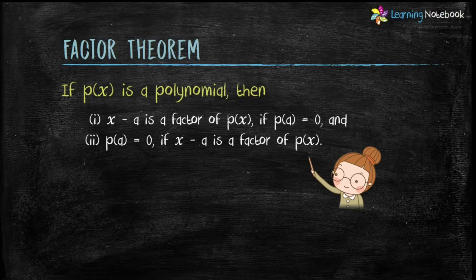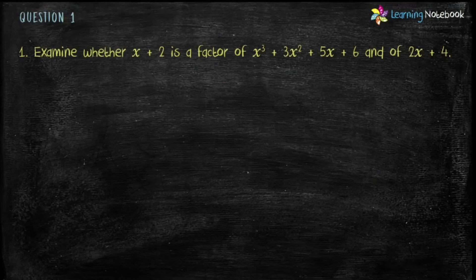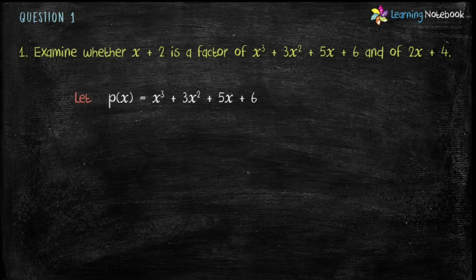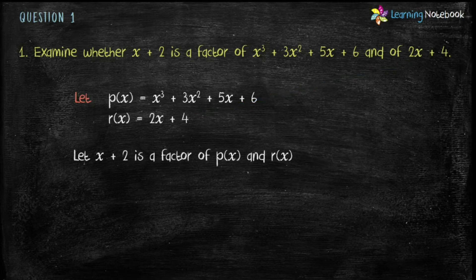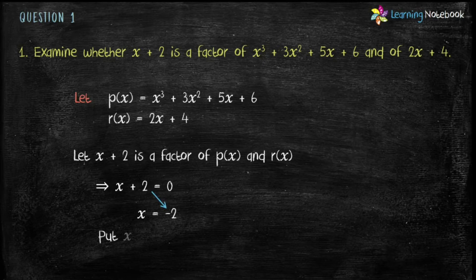Students, let's understand this with the help of an example. Question 1 is: examine whether x plus 2 is a factor of x³ plus 3x² plus 5x plus 6, and of 2x plus 4. Let's assume the first polynomial is P(x) and the second polynomial is R(x). We have to examine if x plus 2 is a factor of P(x) and R(x). So let x plus 2 be the factor, which implies x plus 2 equals 0, so x equals minus 2.